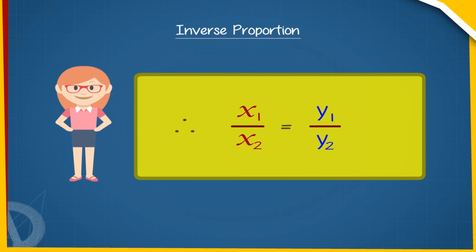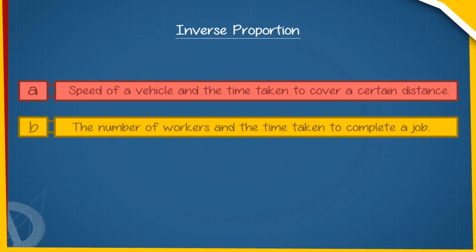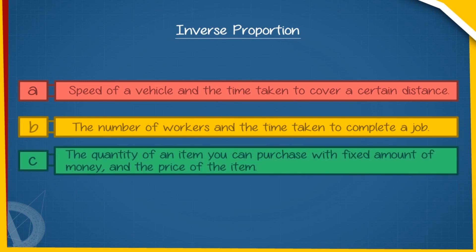Some examples of quantities that vary inversely with each other are: a. Speed of a vehicle and the time taken to cover a certain distance. b. The number of workers and the time taken to complete a job. c. The quantity of an item you can purchase with a fixed amount of money and the price of the item.